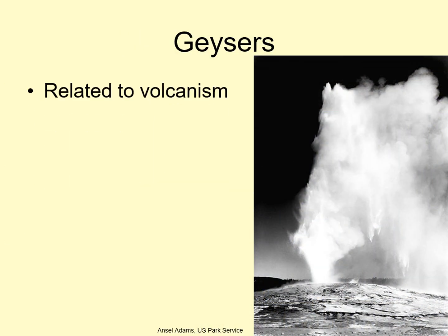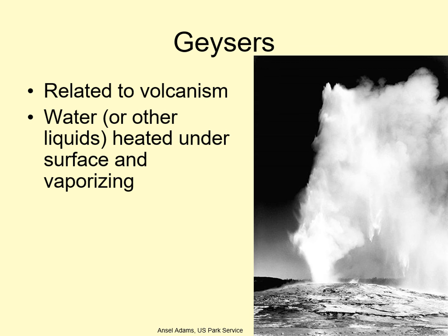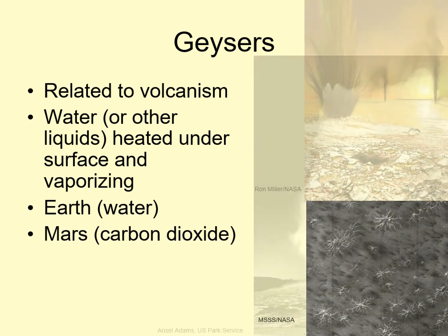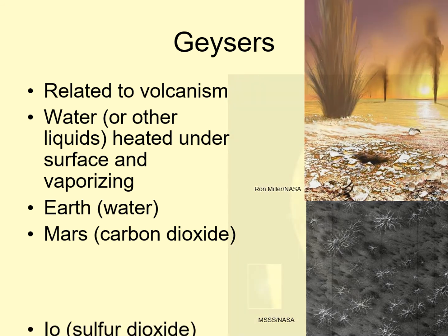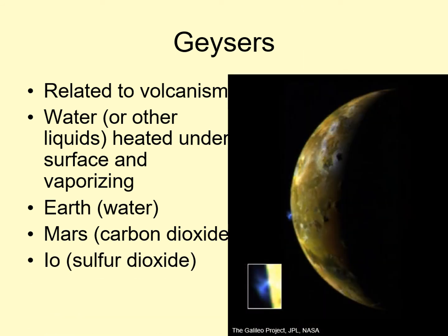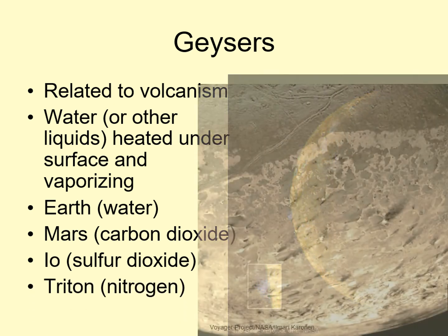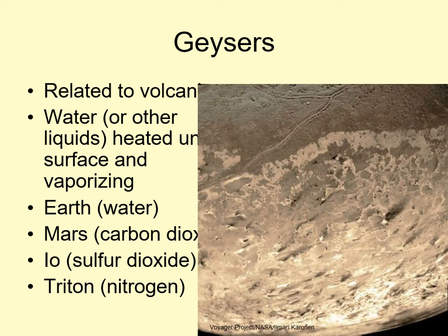Geysers are also related to volcanic activity. A geyser forms when water or some other liquid seeps underground and is heated up enough to be vaporized, the pressure forcing it back up above the surface. Different worlds form geysers from different materials. On Earth, geysers are made of water, but on Mars they form from frozen carbon dioxide. On Jupiter's moon Io, the geysers are made from sulfur dioxide, while on Neptune's moon Triton, they're made of liquid nitrogen. In the case of Mars and Triton, it's possible that the geysers are being powered by sunlight heating up ices, rather than the internal heat of the world.